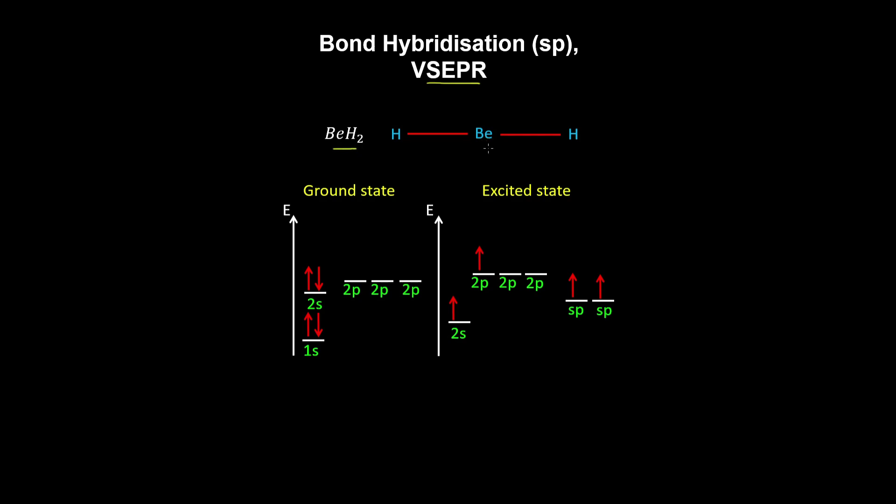So consider beryllium hydride as an example. We first draw the Lewis diagram and focus on the central atom. Here we have the electron configuration for beryllium, which has two valence electrons.